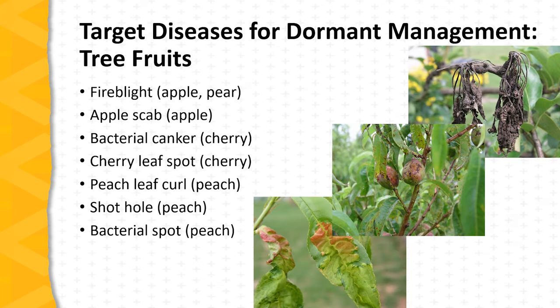Now let's turn our attention to diseases of tree fruits that can be managed with dormant season applications of fungicides and bactericides. These diseases include fire blight of apples and pears, apple scab, bacterial canker of cherry, and cherry leaf spot. Among peach diseases, peach leaf curl, shot hole, and bacterial spot can all be managed entirely or in part through the use of dormant season fungicide applications.